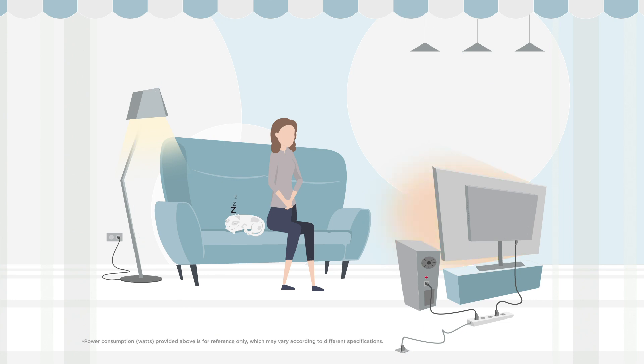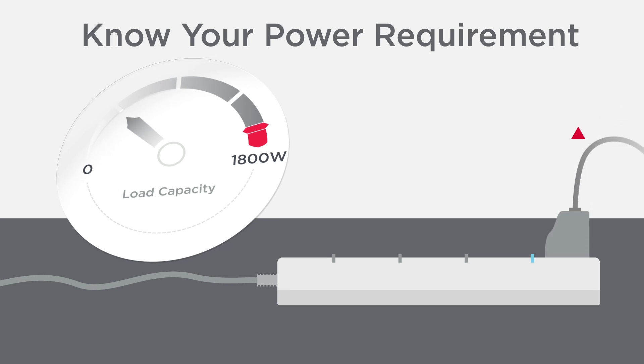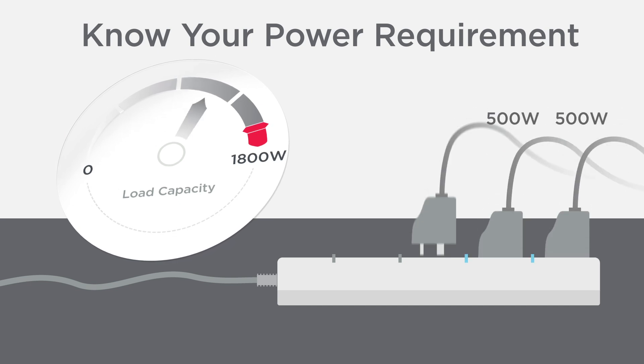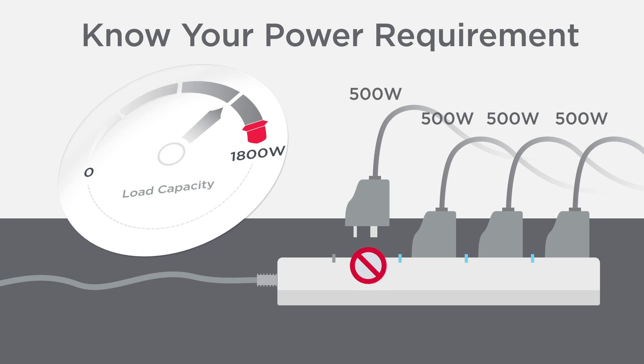Next, to ensure safe device operation, understanding the total power consumption is important. Consider a surge protector with a maximum total power rating of 1,800 watts. As you plug in devices, especially high-power devices, you may quickly reach the surge protector's capacity limit. When using multiple devices simultaneously, make sure not to exceed the surge protector's maximum limit to achieve efficient and safe power usage.